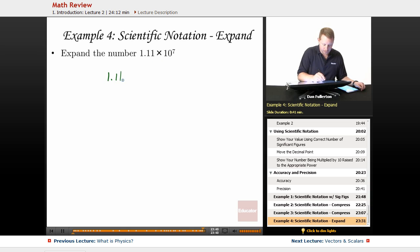so 1, 2, 3, 4, 5, 6, 7. So I would write that as 11 comma 100,000, 11,100,000.